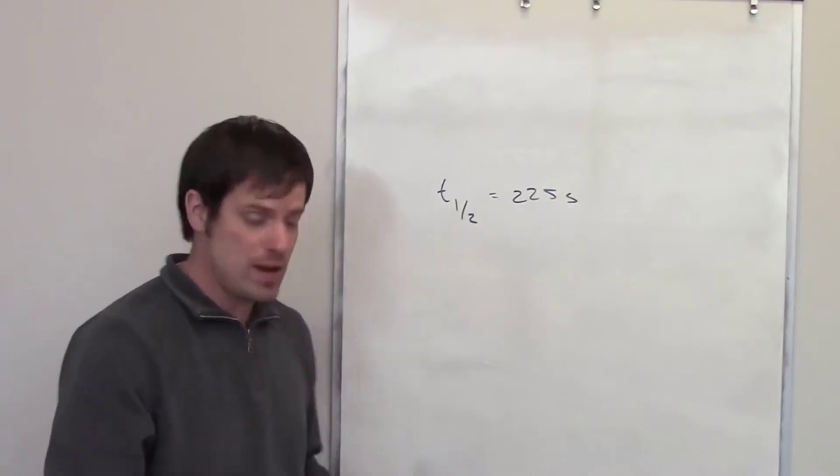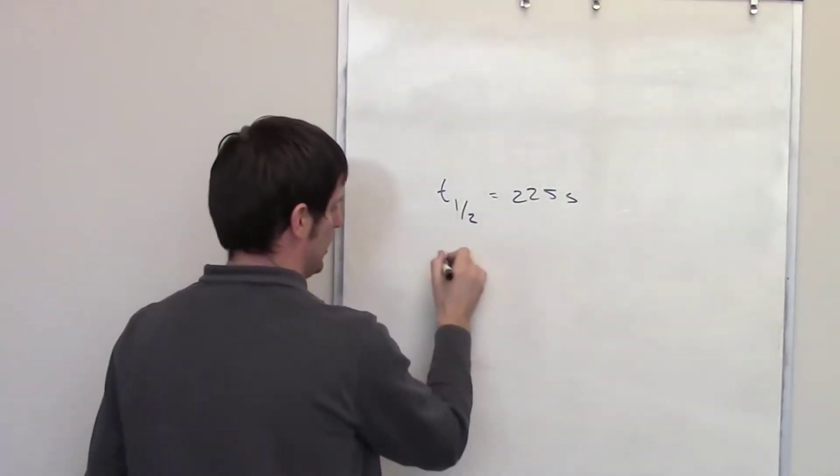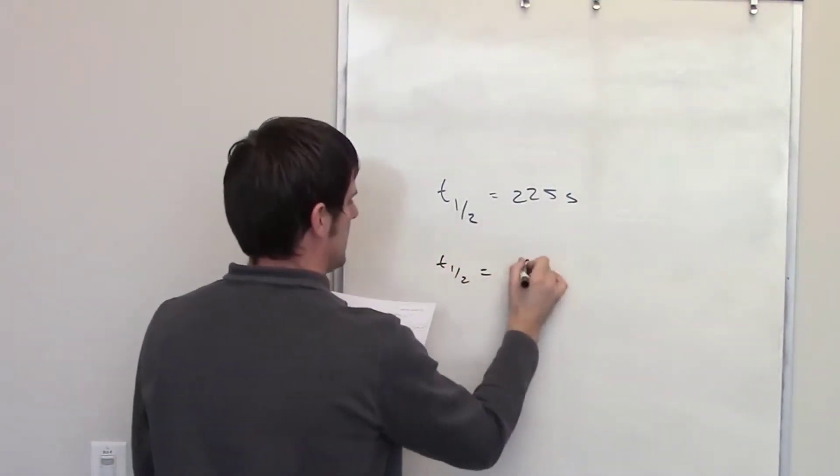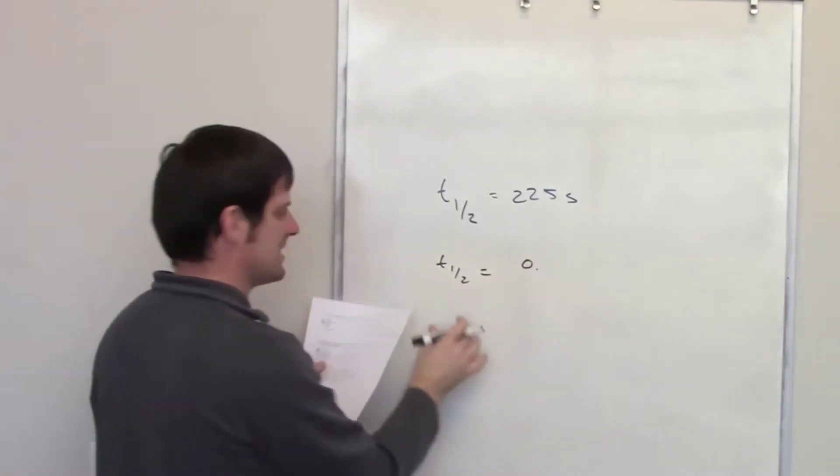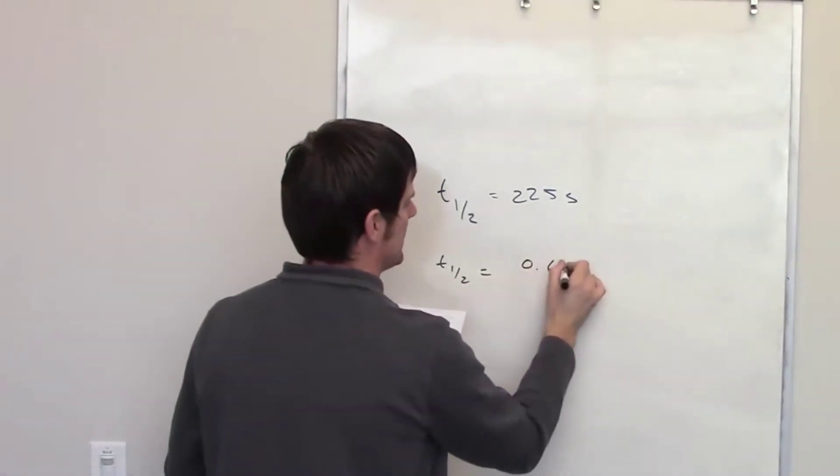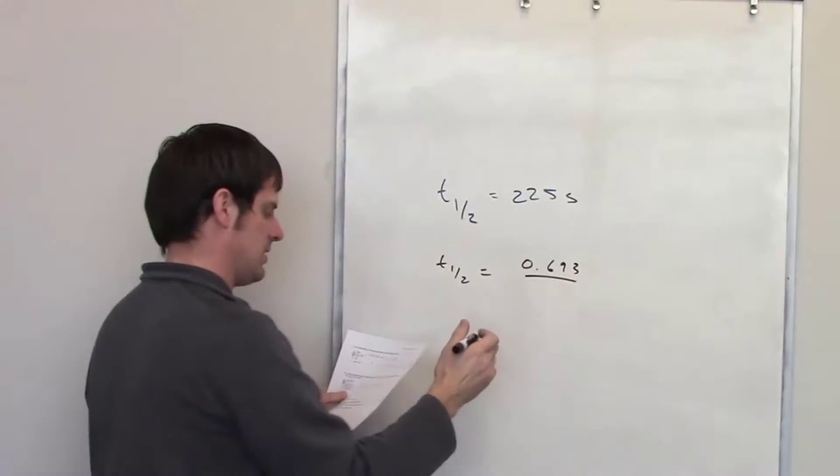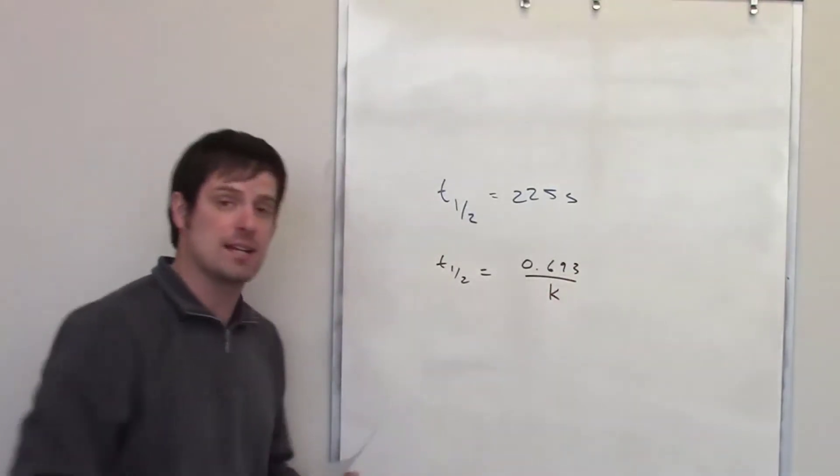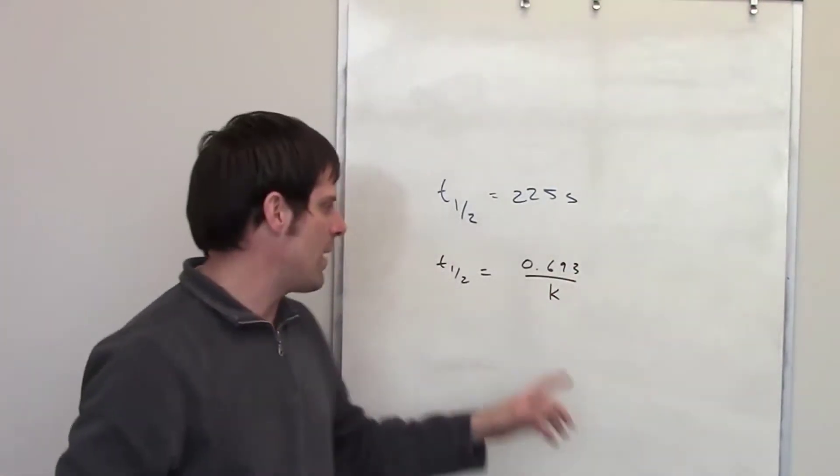I gave you an equation earlier, to which I'll link right here, that says that t1 half, that is the half-life of a first-order decay process, is equal to 0.693 divided by k, that rate constant. And I explained in an earlier video how this is derived.